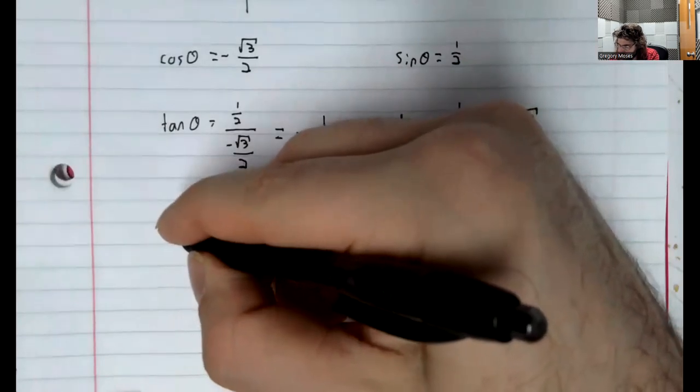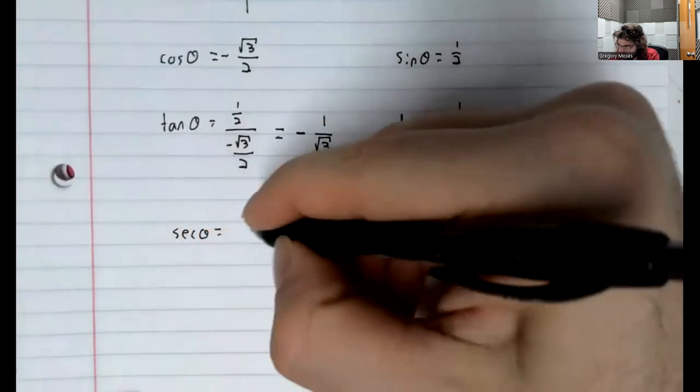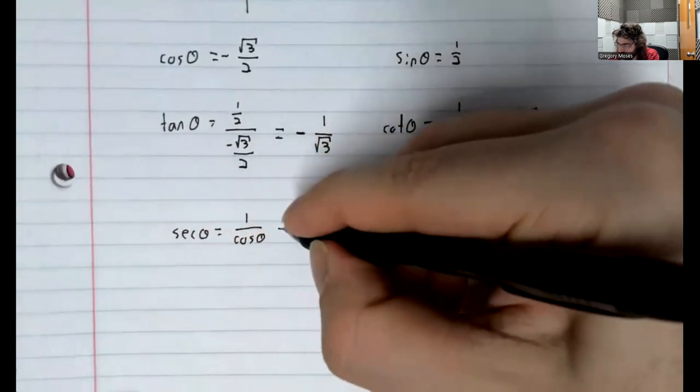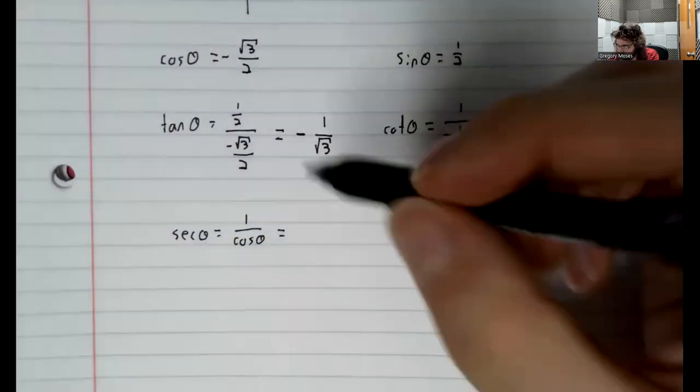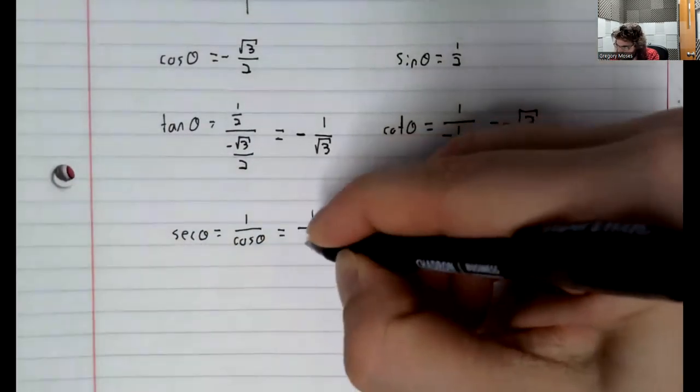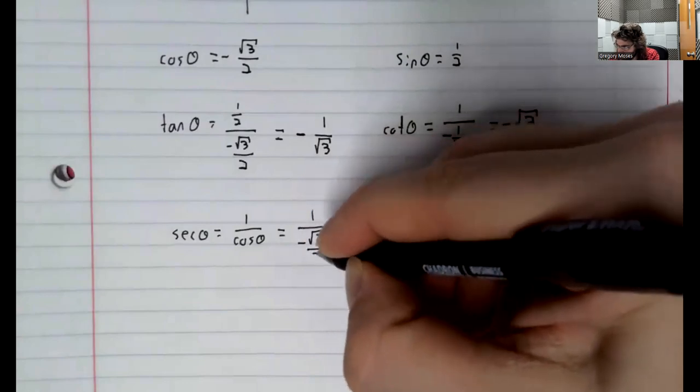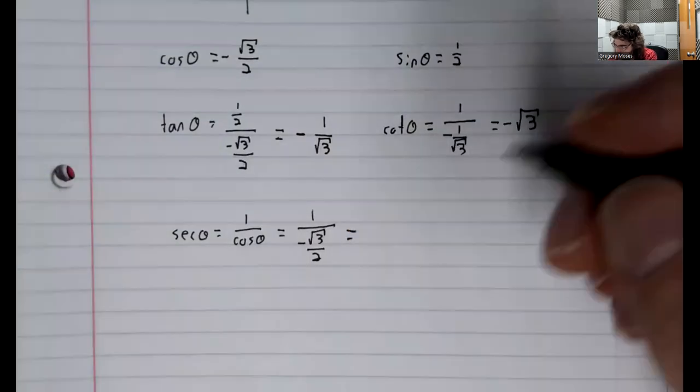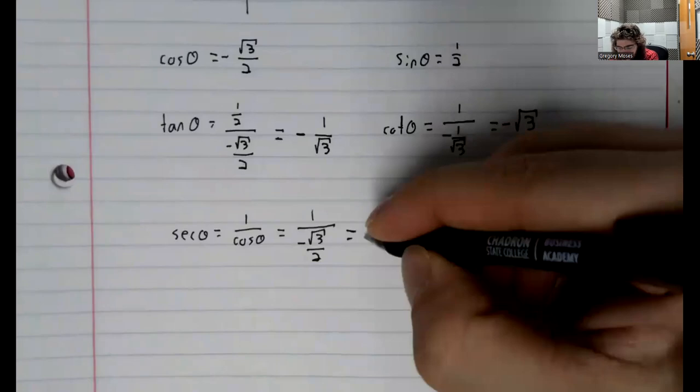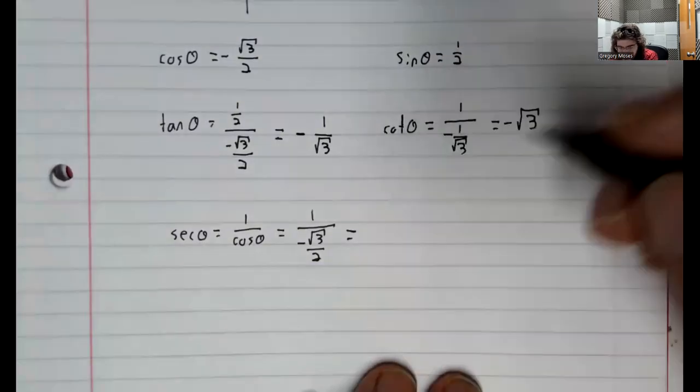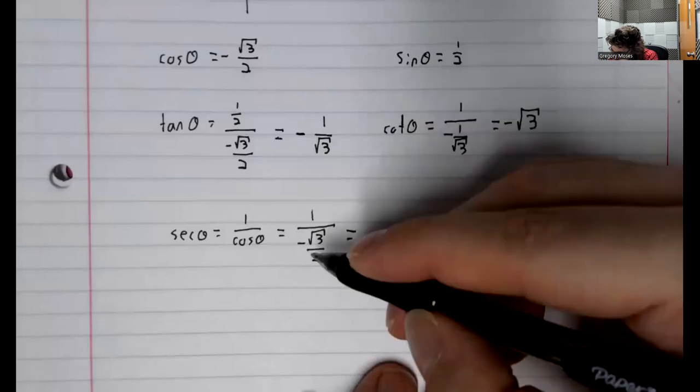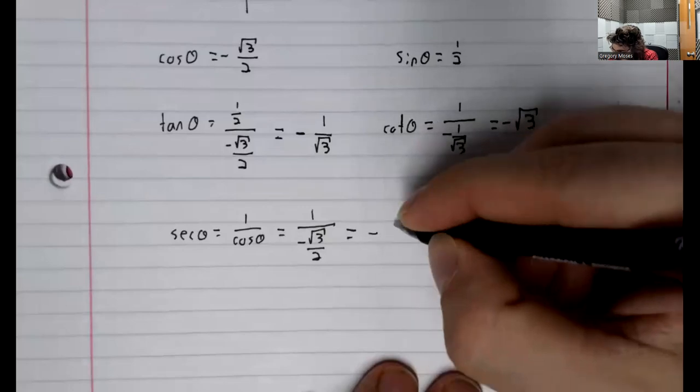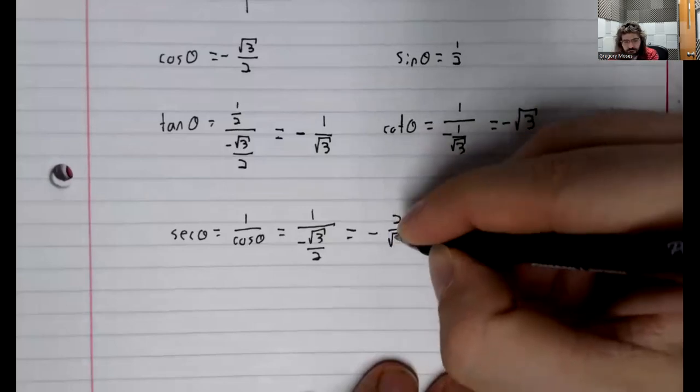And then the secant is 1 over the cosine. Let's see. So 1 over negative the square root of 3 over 2. Again, I think it's possible to be a little unnecessarily picky about simplification, but we should certainly simplify this a little. It's negative 2 over the square root of 3.